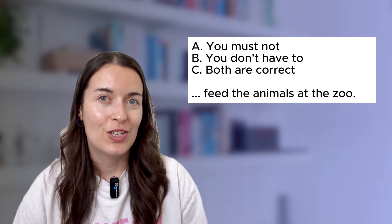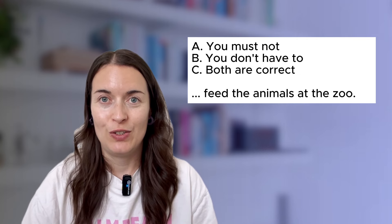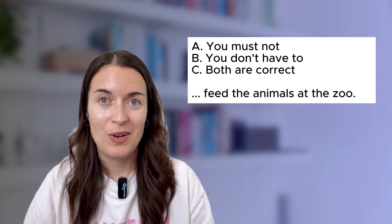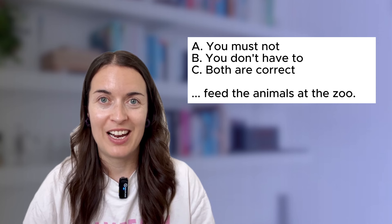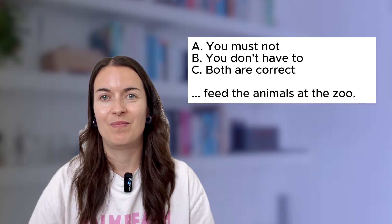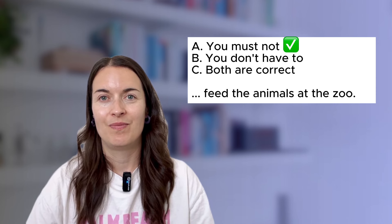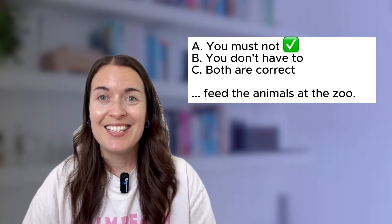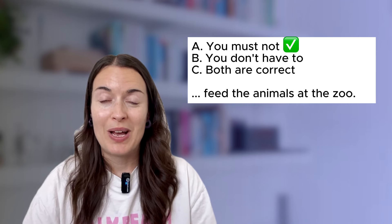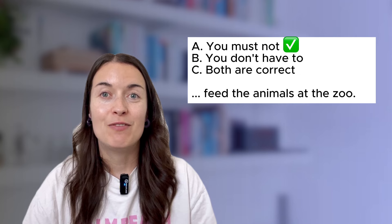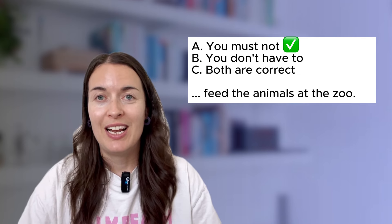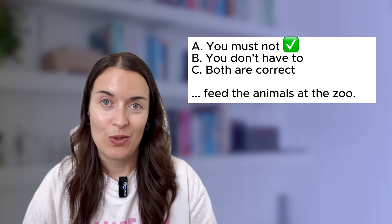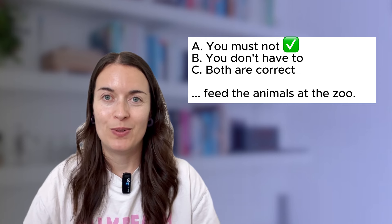'You must not / don't have to feed the animals at the zoo' — which one is correct? Must not. This is a rule about something that is forbidden — you are not allowed to do it. It is forbidden. So you must not feed the animals.